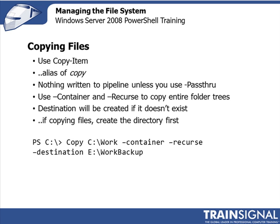Here's one example. I'm going to copy the work folder structure to E:\WorkBackup. This would take all of the files and all of the subfolders and basically copy that over to E:\WorkBackup. Or if I want to copy just certain types of files — in this case, the XML files in the scripts directory to E:\WorkBackup\XML — that's how I would do it. I would want to make sure that that XML folder exists before I did my copy command.